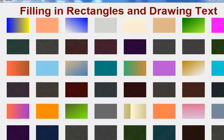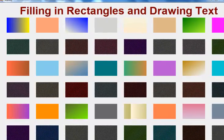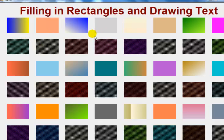Hello guys, I just completed this long tutorial just to fill a rectangle and also draw text right up there. To complete this, I've actually used a linear gradient brush and also used the linear gradient mode.